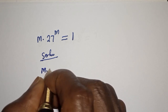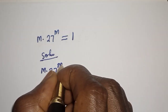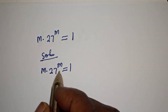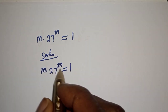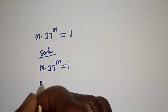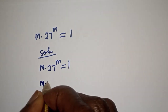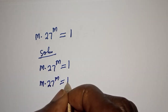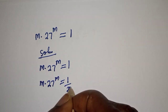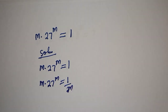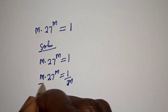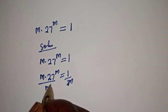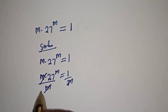m multiplied by 27 raised to power m is equal to one. Let's divide both sides of this equation by m. This gives 27 raised to power m is equal to one over m, and the m's cancel.